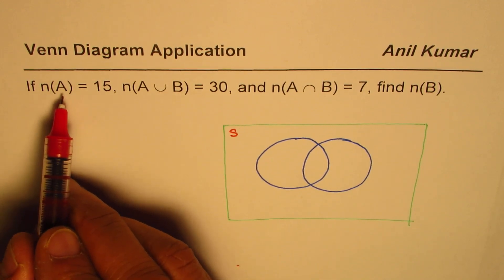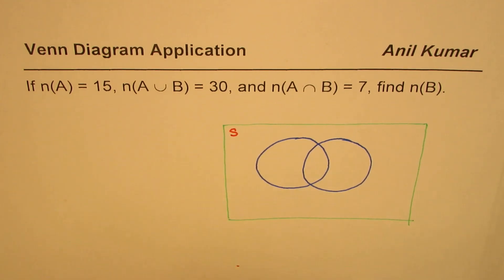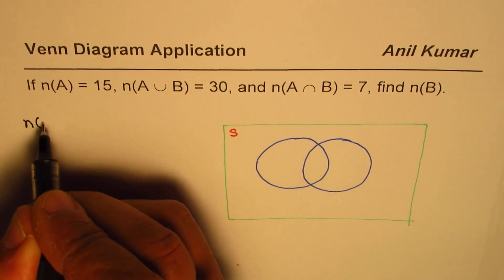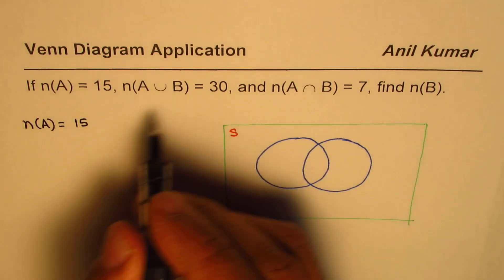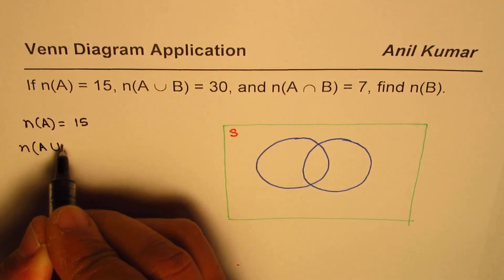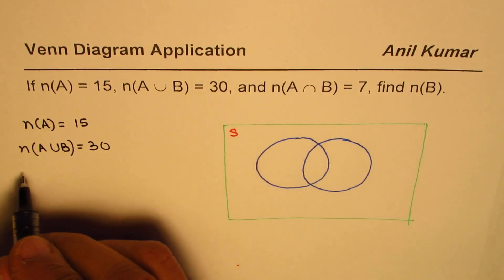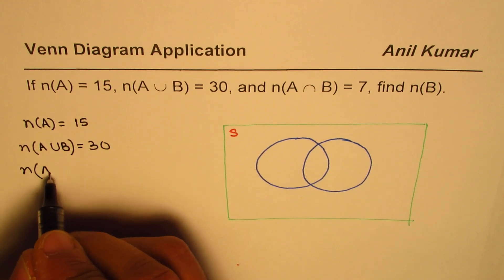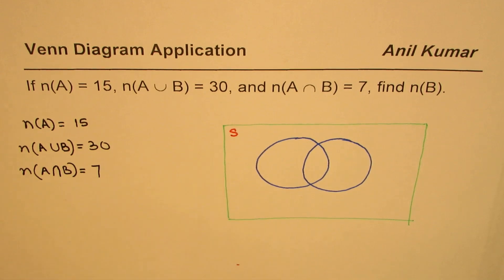What are we given here? We are given number of elements in A is 15. So, let me rewrite here. Number of elements in A equals to 15. Number of elements in A union B equals to 30, and number of elements A intersection B equals to 7.